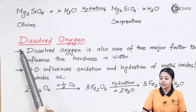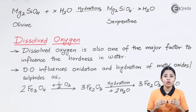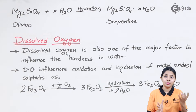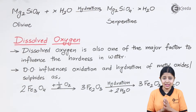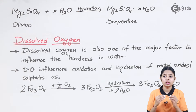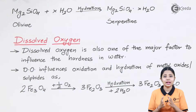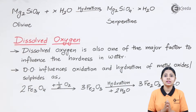Regarding dissolved oxygen: as mentioned, dissolved oxygen itself does not directly cause hardness, but it oxidizes certain minerals through oxidation reactions. The products of these reactions are soluble in water and act as impurities, converting pure water into hard water. Let us see the different reactions through which this happens.